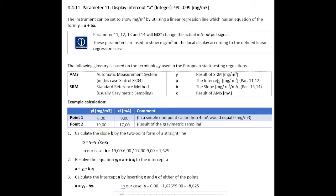I have prepared here a little example where we get two points. Point 1 is 6 milligram per cubic meter equals 9 milliamp, and point 2 is 19 milligram per cubic meter showing 17 milliamp. Y is the result of the standard reference method in milligram per cubic meter. A is the intercept in milligram per cubic meter. B is the slope in milligram per cubic meter per milliamp. And X is the result of the automatic measurement system, meaning the S3O4 or S3O5.